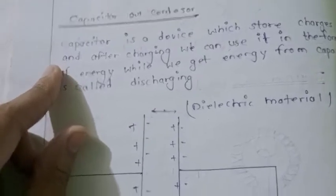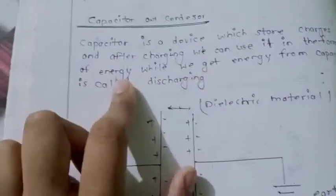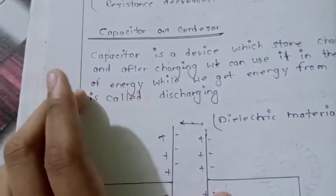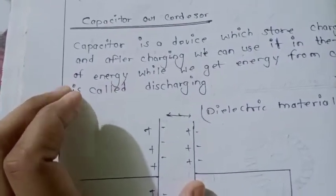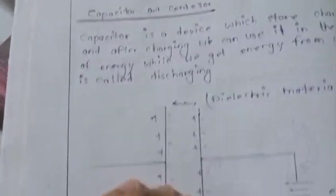After charging we can use it. The process of charging the capacitor is known as the charging process, and when we take energy from the capacitor, it is the discharging process.